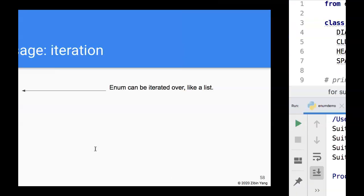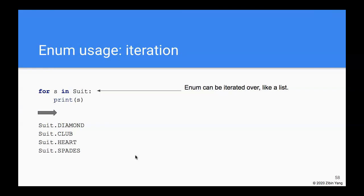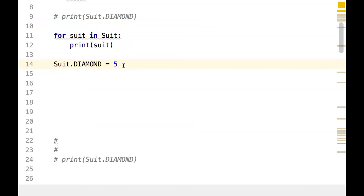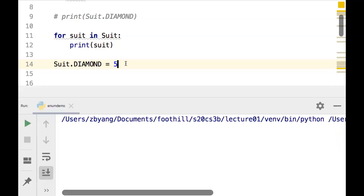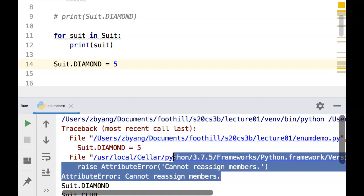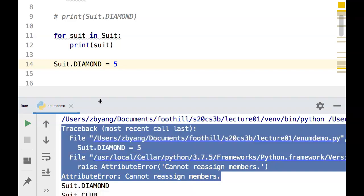The next thing we can do is we actually try to reassign one of the members to a different value, which we said was undesirable because enum members are supposed to be constant. But if we try to do this and run it, we are actually prevented from doing that, which is great.